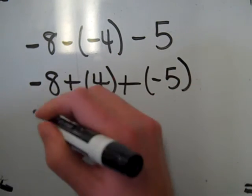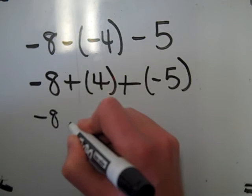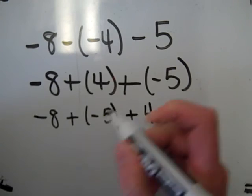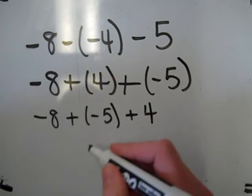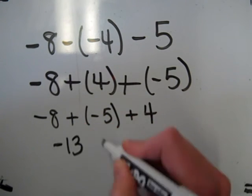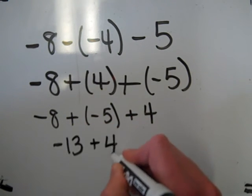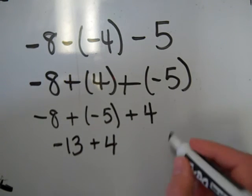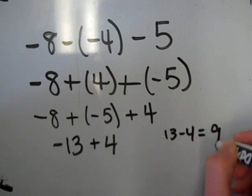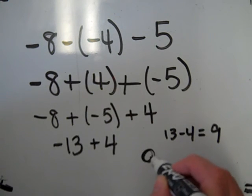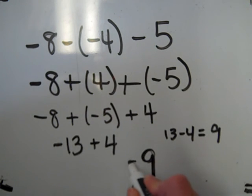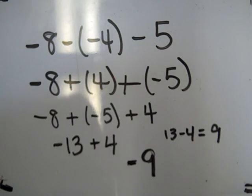Now I'm going to rewrite it so the numbers with the same signs are together. Negative 8 and negative 5 have the same signs so I add them: 8 plus 5 is 13, and both addends are negative so the answer is negative. Negative 13 plus 4 — these numbers have different signs so I subtract the absolute values: 13 minus 4 is 9. Since the greater absolute value is 13, I take the sign from that number. The answer is negative 9.